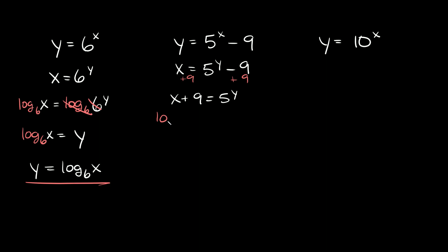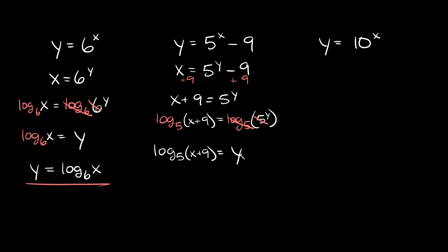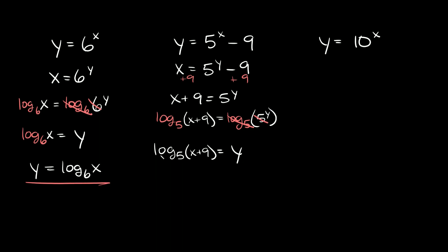So we're gonna say log base 5 of x plus 9 is equal to the log base 5 of 5 raised to the y. On this side, all we're left with is log base 5 of x plus 9, and the log base 5 and the 5 cancel out, so we're just left with y. So the inverse function is y is equal to log base 5 of x plus 9.